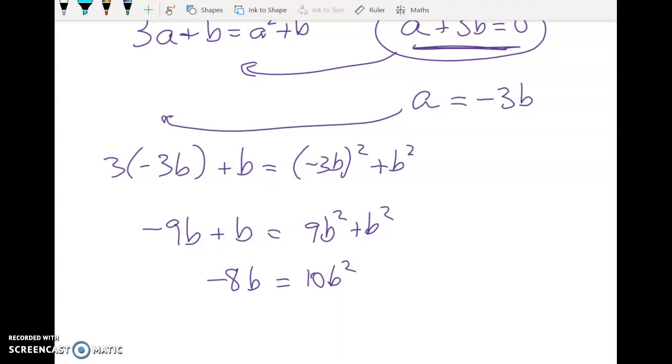I'm going to just now don't divide everything through by b please. Can we just not do that? We're going to get 0 is equal to 10b squared plus 8b.